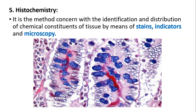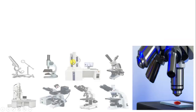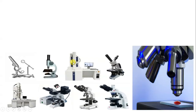This technique is very useful in biotechnology, especially plant biotechnology and genetic engineering. In histochemistry, we use dyes, stains, and indicators inside the cell so that we can observe the chemical constituents present, and we are able to observe them with the help of a microscope.